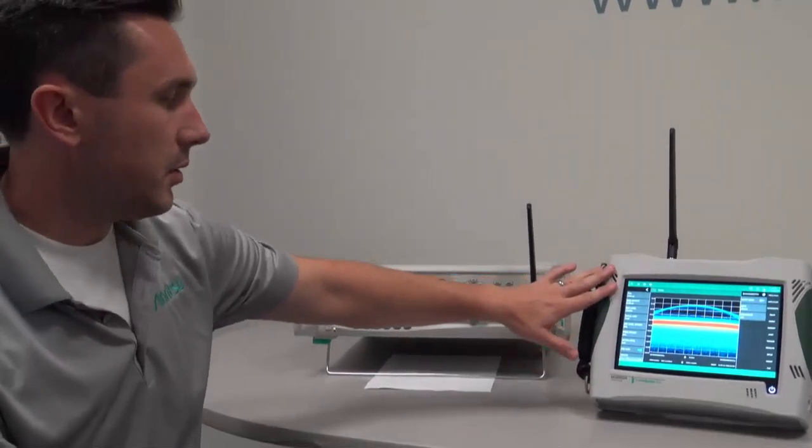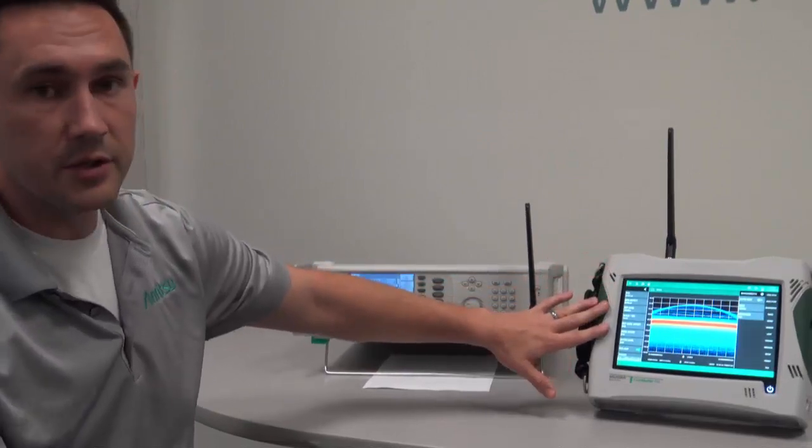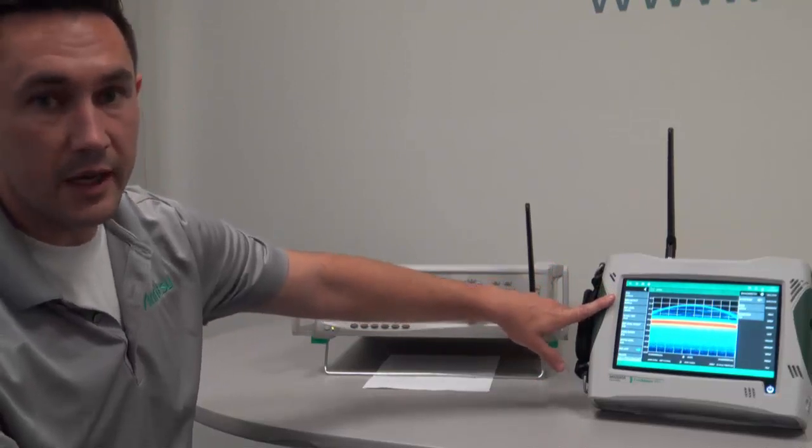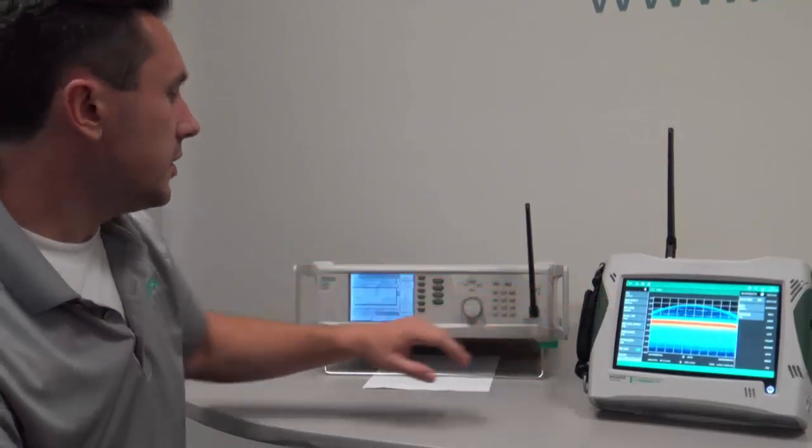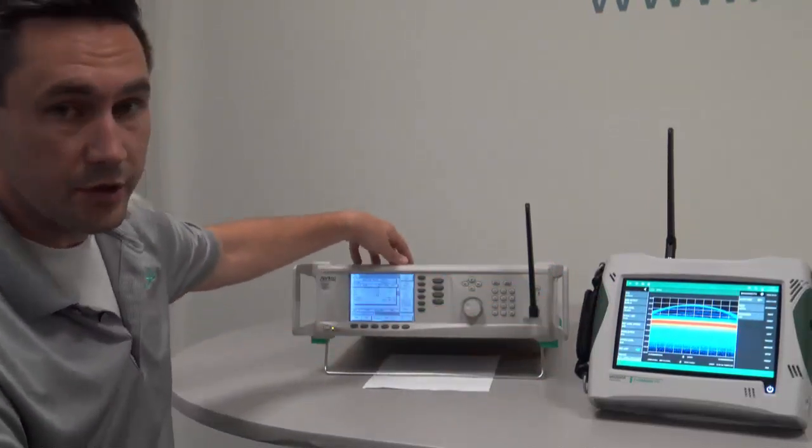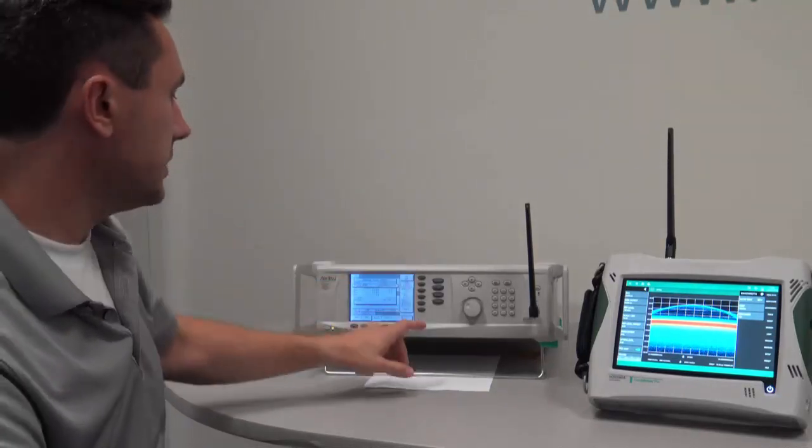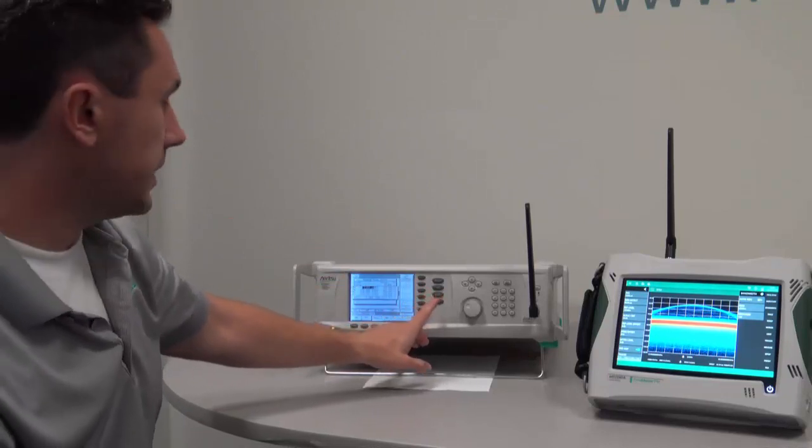Now, apart from just the POI, the analyzer is also able to capture much narrower signals. In this case, the minimum detectable signal of the analyzer is 5 nanoseconds. So I'm going to set my signal generator here to generate a pulse that's much narrower than the regular 2 microseconds. In this case, I'm going to go to 20 nanoseconds.